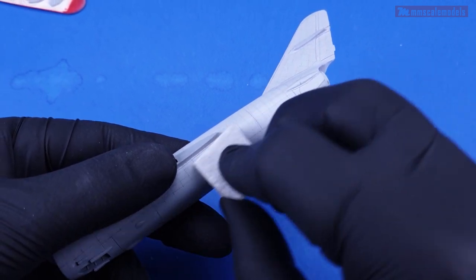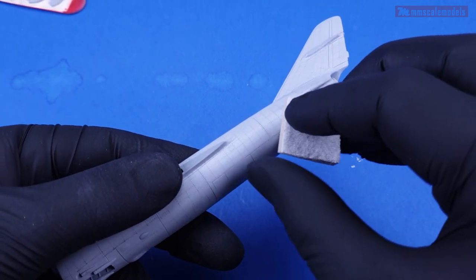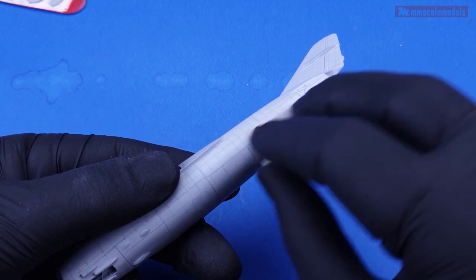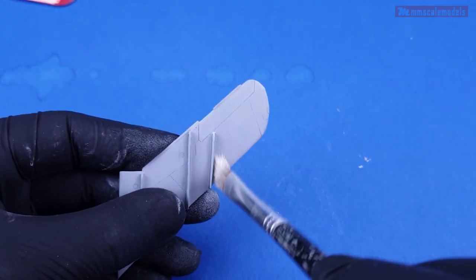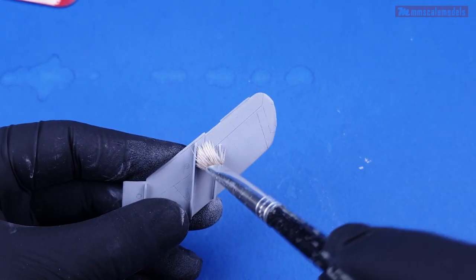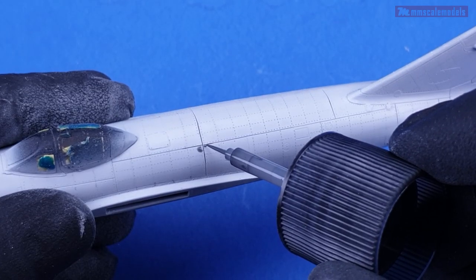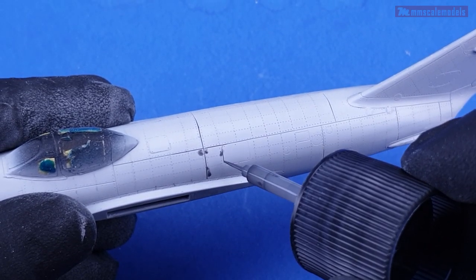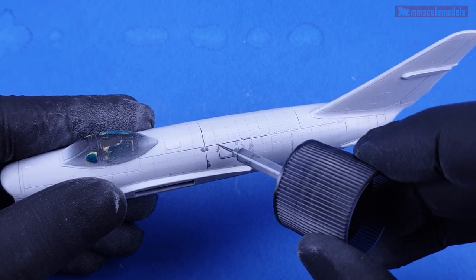After the riveting was done I sanded down everything with a 3000 grit sanding sponge. This will remove most of the raised portions of the rivets and also will make the primer much smoother which will be beneficial for the painting stage.